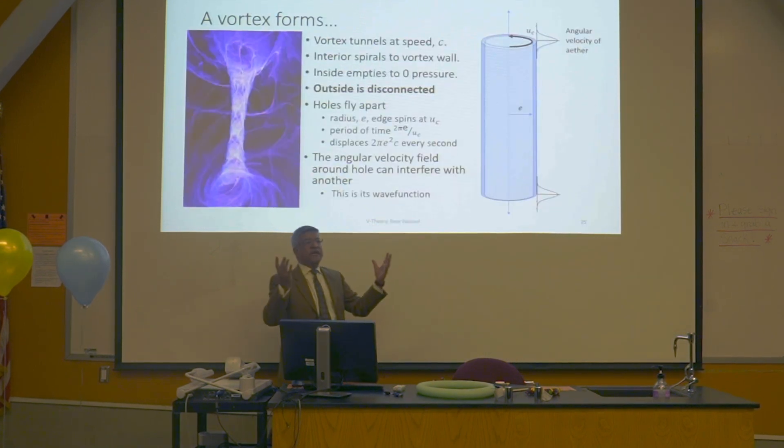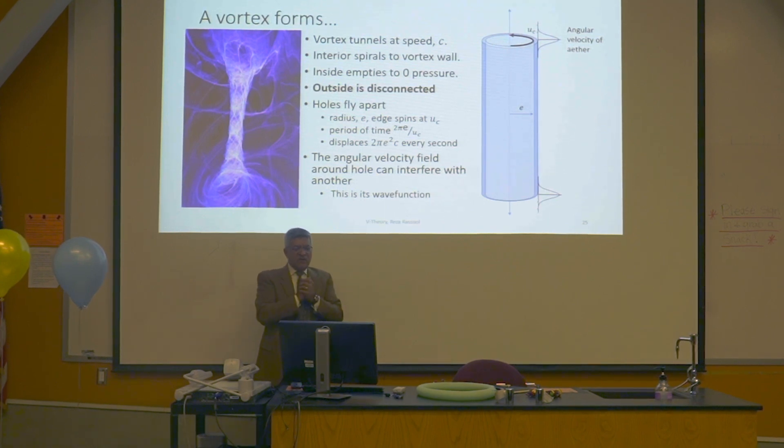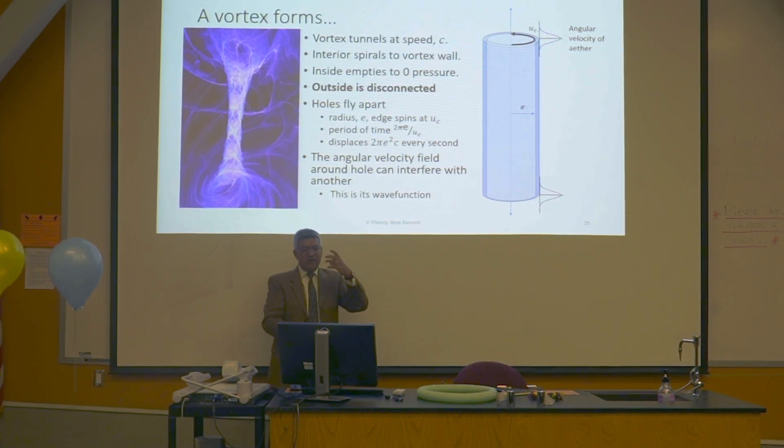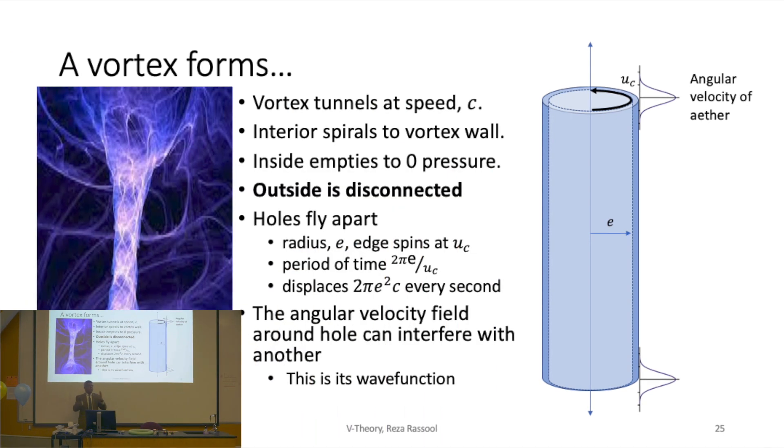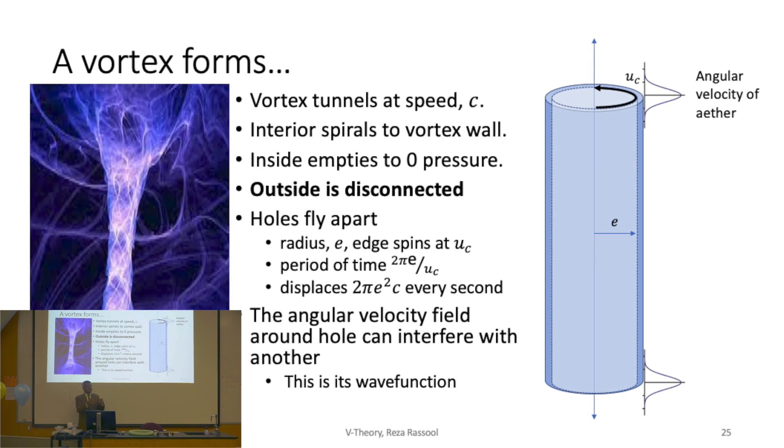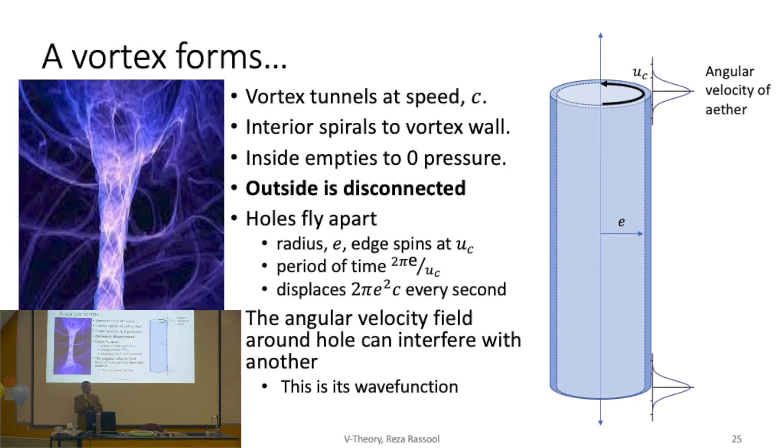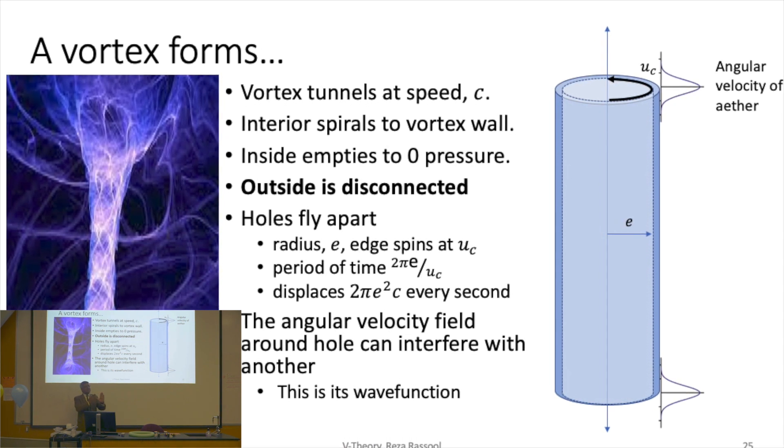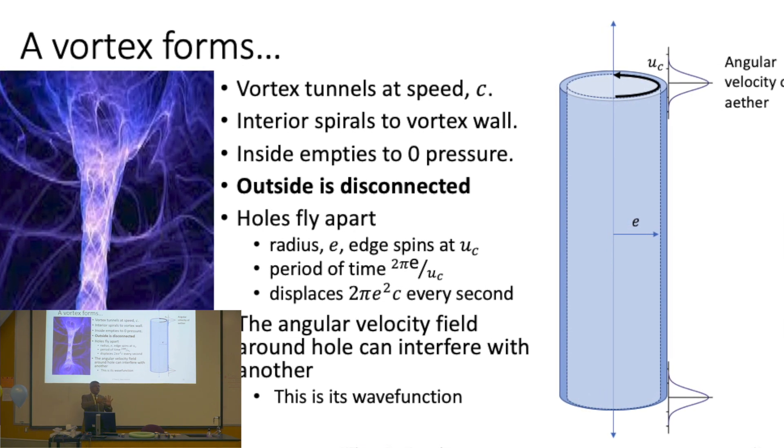So what's going on here? A vortex is formed. So rotation inevitably causes the ether to tear. Two circular holes form at a distance from the elemental volume. The interior spirals out to the vortex walls by centrifugal force. And it leaves a void in the middle. There's nothing in the center. But the wall of the vortex continues to spin. And it continues to spin at that velocity, which exceeds the velocity of the adjacent layer to maintain grip.